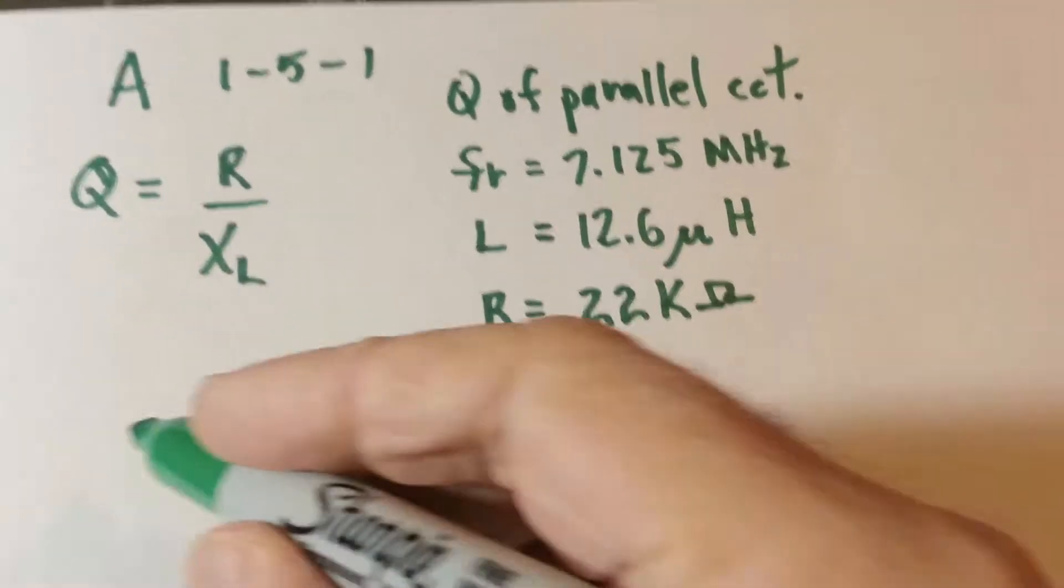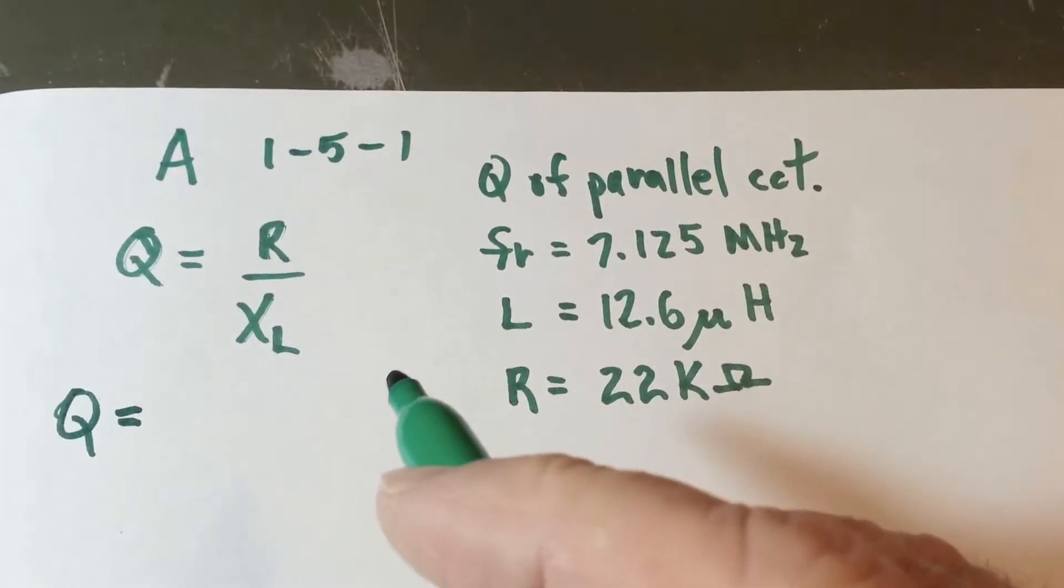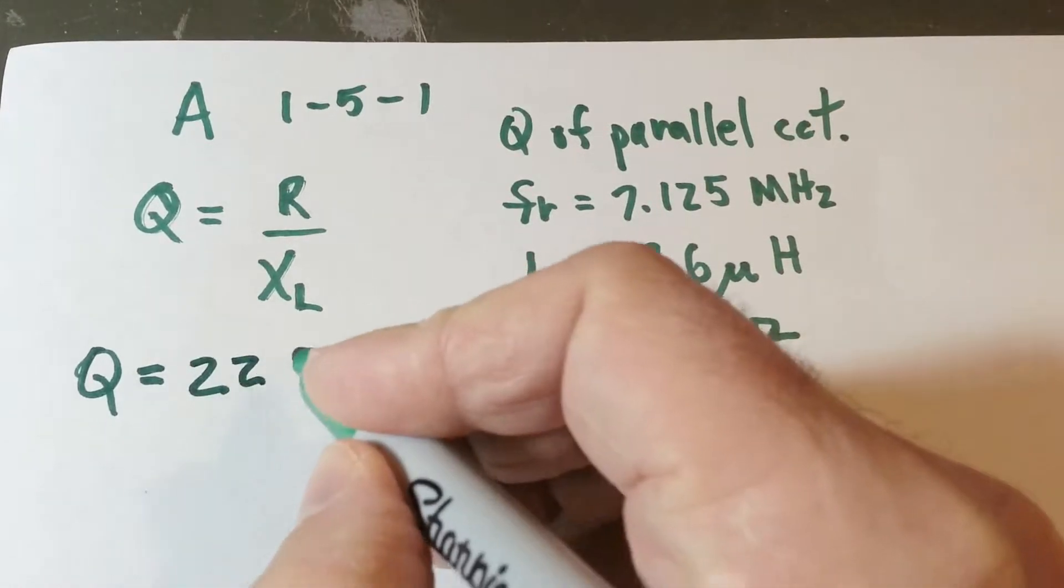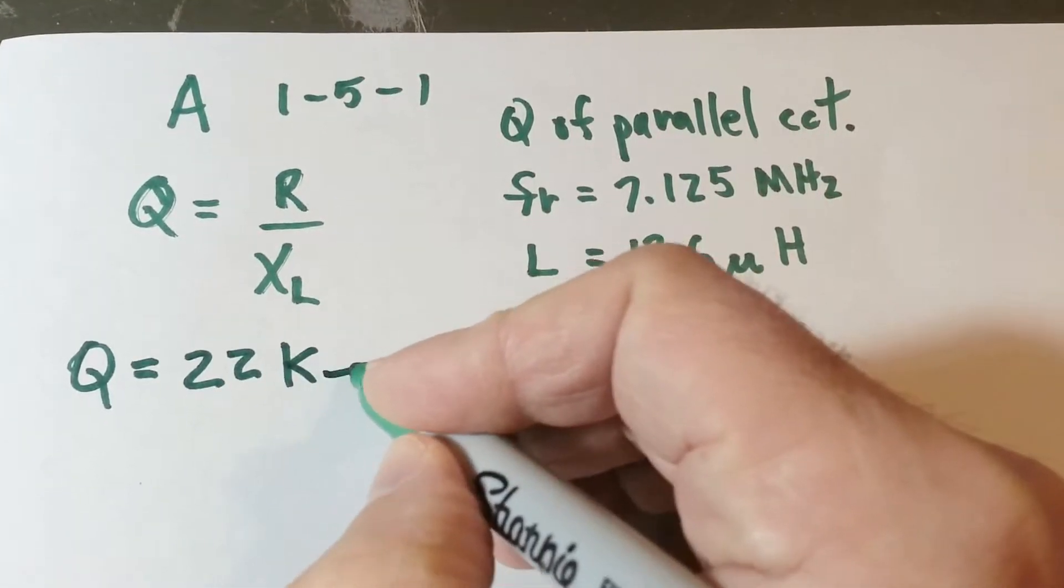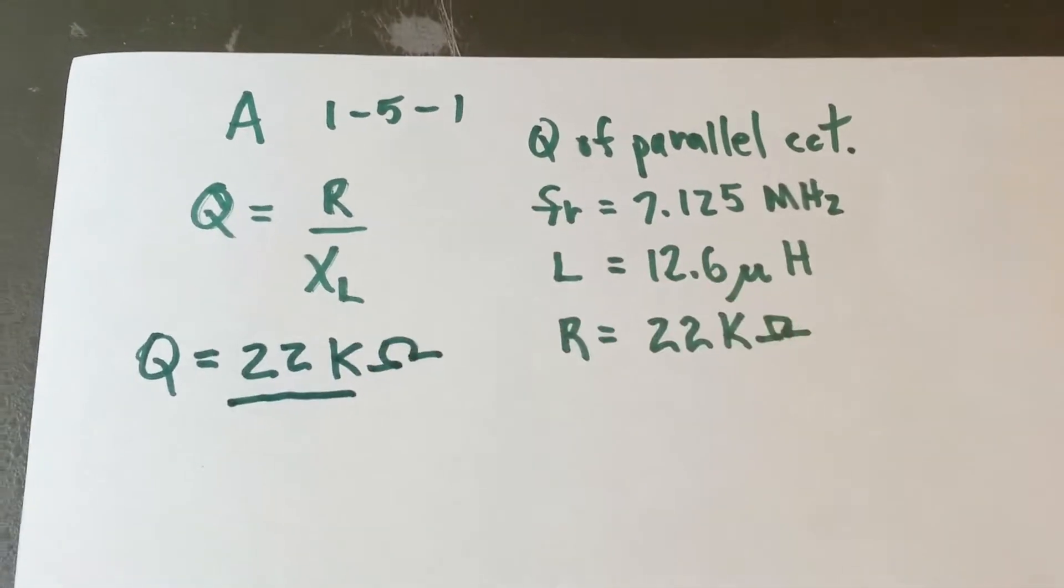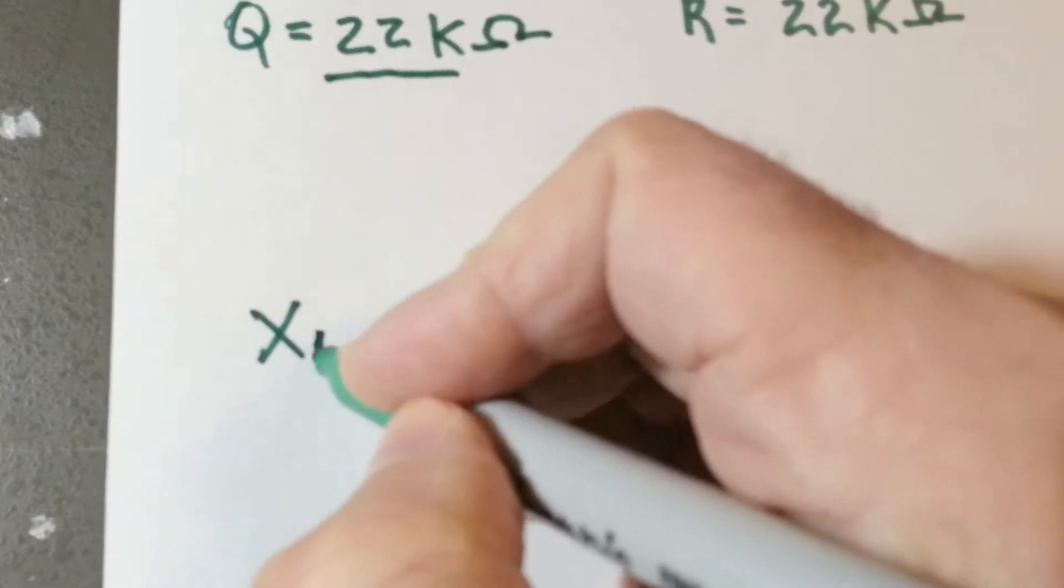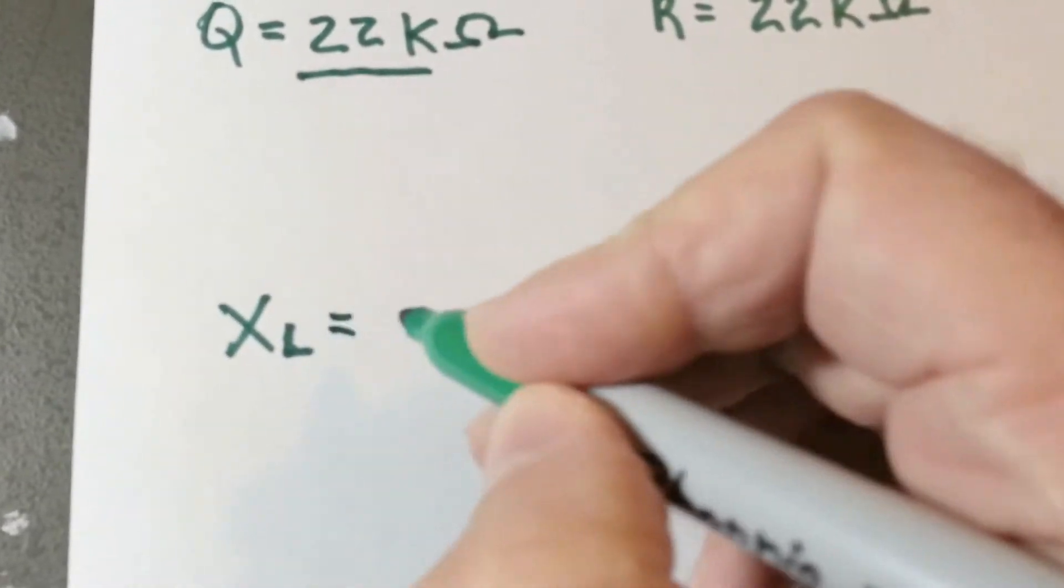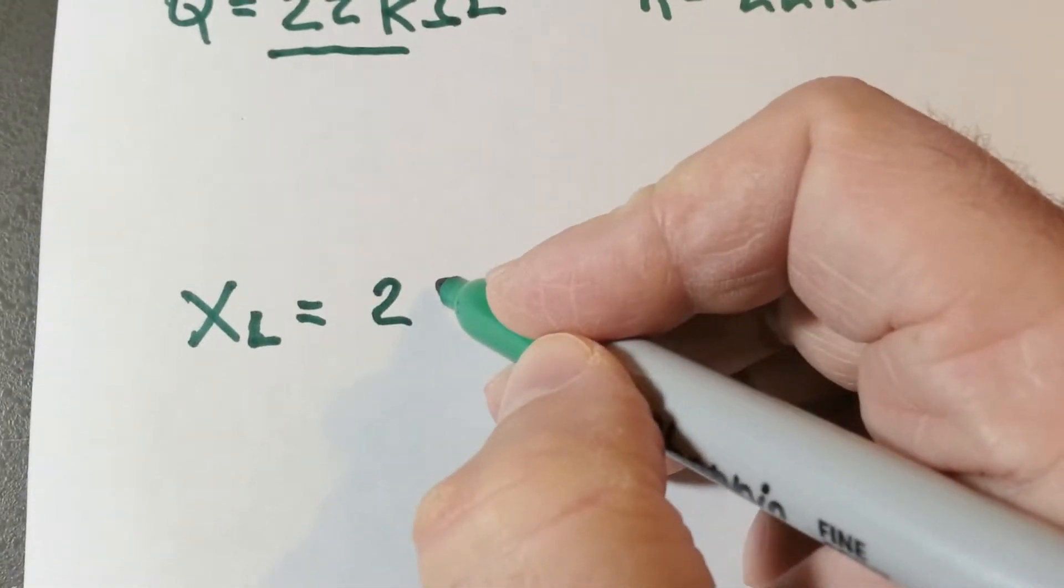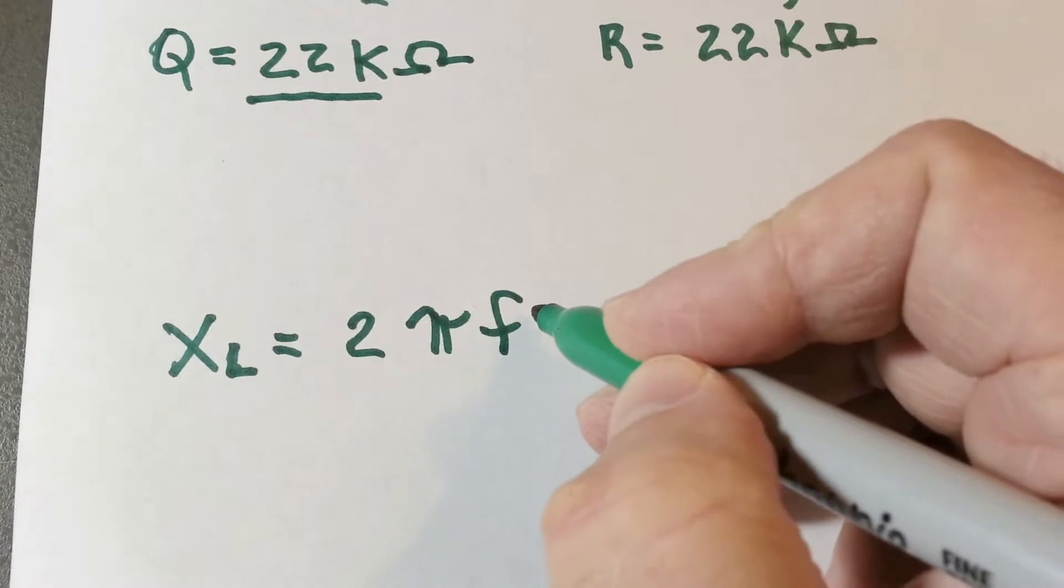Well, we know Q is going to be equal to the resistance 22 kilohms over whatever that XL is. So let's figure out XL here. XL is equal to, very simple, 2πFL.